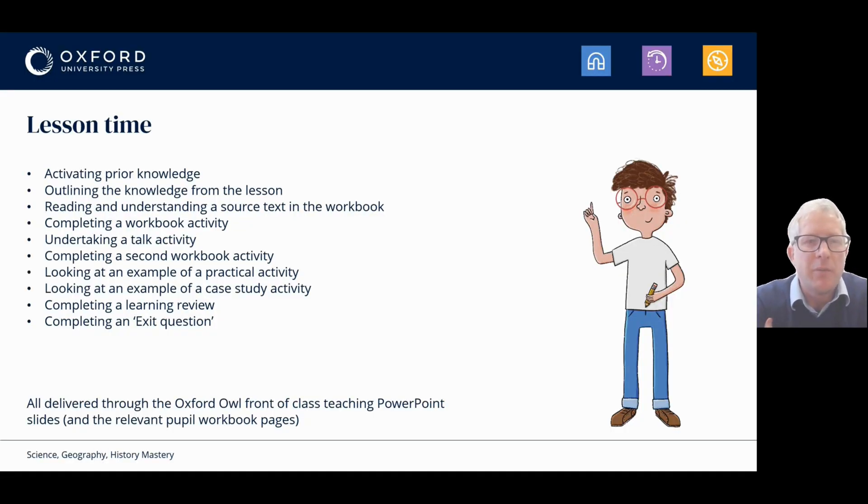So on this slide, we've listed the key points that we're going to focus on during this session, picking out the main elements that would appear in any given lesson. So firstly, I'll show you how we activate prior knowledge in this instance, seeing what pupils already know about light. Then we move to outlining the knowledge that they're going to learn from this particular lesson. We'll look at a source text that appears within the workbook. We'll look at a specific workbook activity, followed by a specific talk activity, an example of a second workbook activity. Then we'll move to looking at a practical science activity. Then we'll look at an example case study and how that can be used flexibly. And then we'll move towards completing a learning review and finally an exit question. And that will give you a flavour of all of the key elements that appear within any given lesson. And all of this is delivered through the Oxford Hour front of class teaching PowerPoint slides and the relevant corresponding people workbook pages.